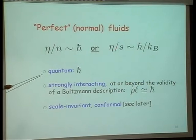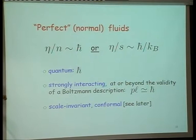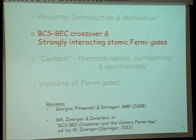So one is trying to understand why this is true. One has to look at quantum regimes. One has to look at very strong interactions beyond the validity of Boltzmann. And as you'll see later on, we also want to look at scale invariant or conformally invariant theories. So the setting in which this kind of physics is likely to be studied in most detail with many different experiments is the problem of the BCS-BEC crossover and strongly interacting Fermi gases.